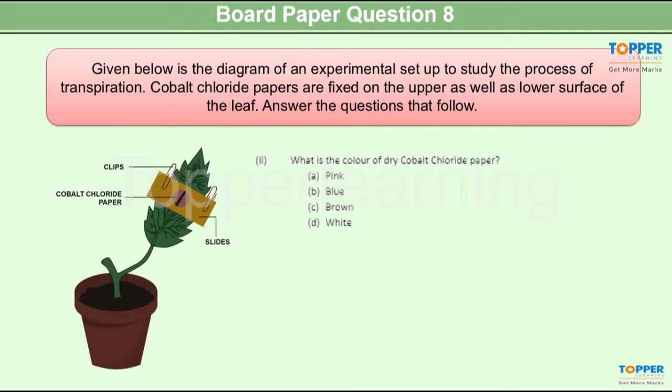Question 2. What is the color of dry cobalt chloride paper? Well the correct answer is option B. That is the dry cobalt chloride paper is initially blue in color which changes to pink color when transpiration occurs.